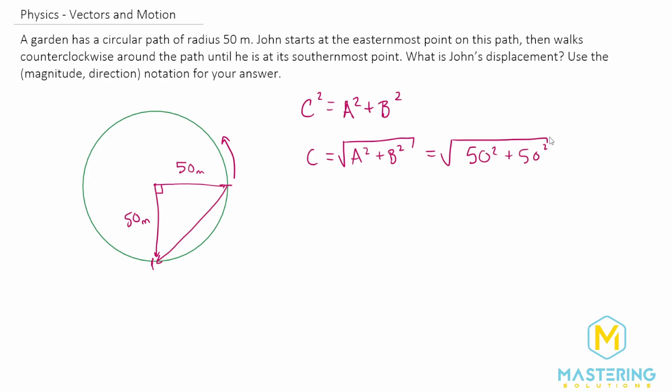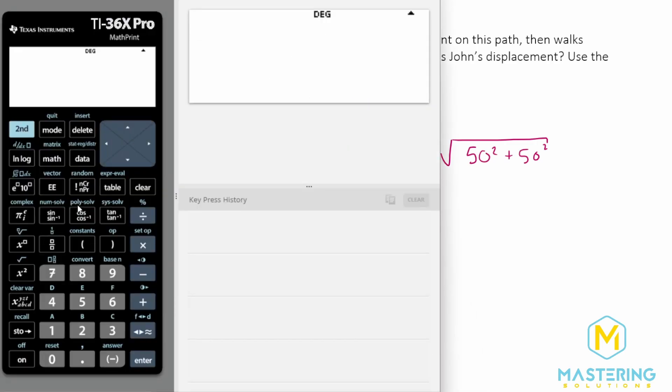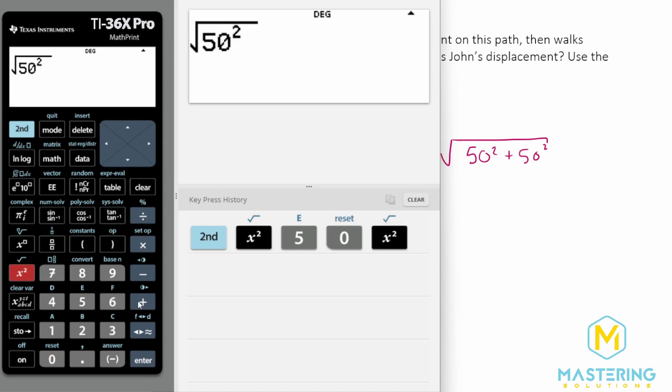And since it's a special triangle you might have it memorized on how to find this but we'll just plug it into the calculator because it's just as easy. Okay so 50 squared plus 50 squared.